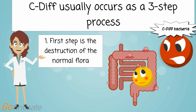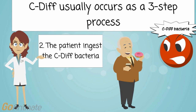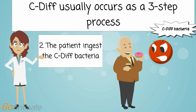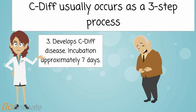In the first step, the destruction of normal flora occurs — the current antibiotic may have killed good bacteria along with the bad bacteria. In the second step, the patient will usually ingest the C-diff bacteria. This usually occurs while they're in the hospital, and the spores can be very abundant in the hospital environment.